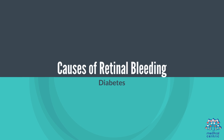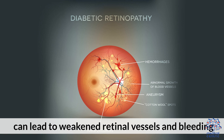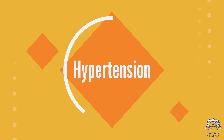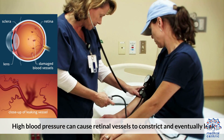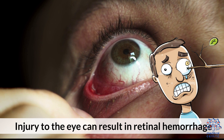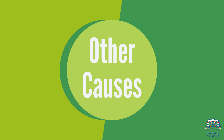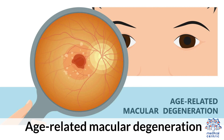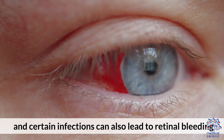Causes of retinal bleeding: Diabetes — diabetic retinopathy, a common complication of diabetes, can lead to weakened retinal vessels and bleeding. Hypertension — high blood pressure can cause retinal vessels to constrict and eventually leak. Trauma — injury to the eye can result in retinal hemorrhage. Other causes include age-related macular degeneration, blood disorders, and certain infections, which can also lead to retinal bleeding.